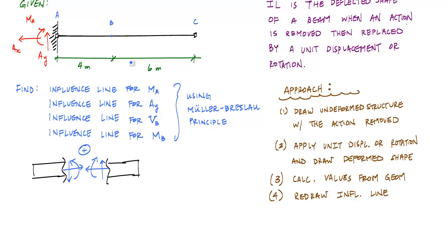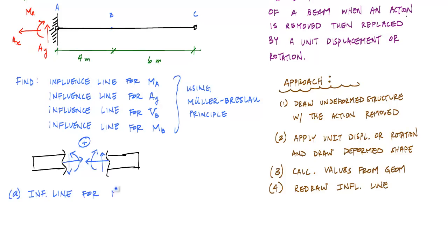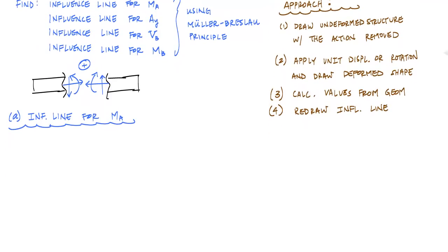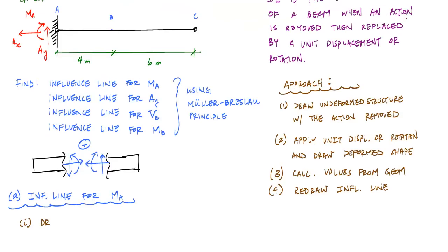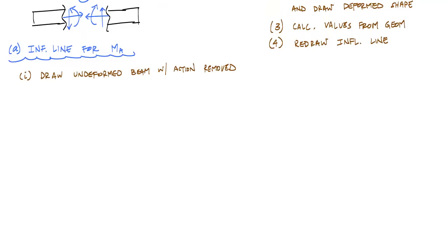The first thing I'm going to do is calculate the influence line for a moving concentrated load along this length here for the moment reaction at A. So the first thing I do is draw the undeformed structure with this moment reaction removed. If I remove the moment here, I have essentially a pin because I only have vertical and horizontal reactions available at point A. And this beam will now look like this with my moment at A removed.